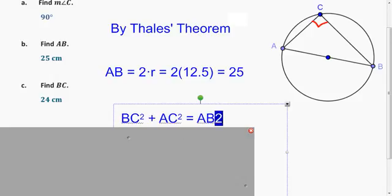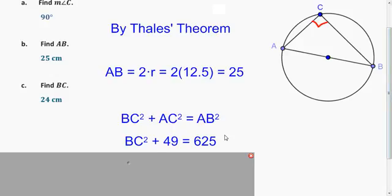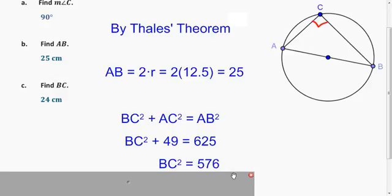Oops, that should be an exponent here. And if you didn't notice that this is a Pythagorean triple, you can just go through the steps here. It should also be an exponent. Sorry about that. So 7 squared is 49, 25 squared is 625. Subtract 49 from both sides, and take the square root, and we get 24.